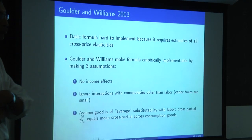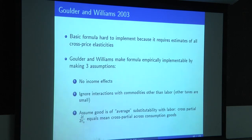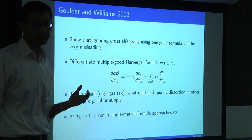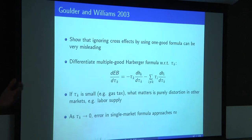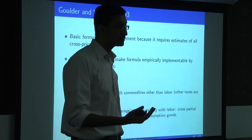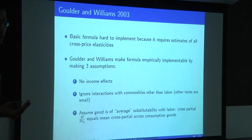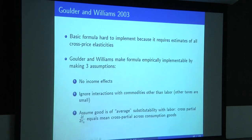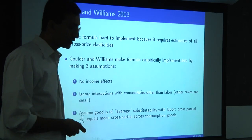The problem they tackle in this paper—the insight was old, but the implementation is new—is that it's very hard to empirically implement the full formula because you have to estimate too many parameters. There are all these cross-price elasticities: if you have 100 goods, you have to estimate 100 elasticities, which is very difficult. They derive an empirically implementable version of the formula by making three relatively strong assumptions that allow you to make a lot of progress and simplify the problem significantly. This paper illustrates important techniques in public finance: being aware of what you can estimate and making reasonable assumptions to derive formulas in terms of empirically estimable quantities.